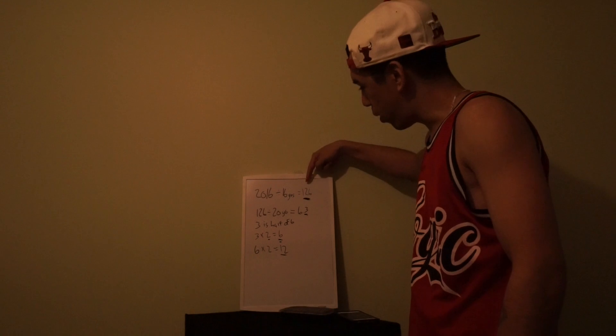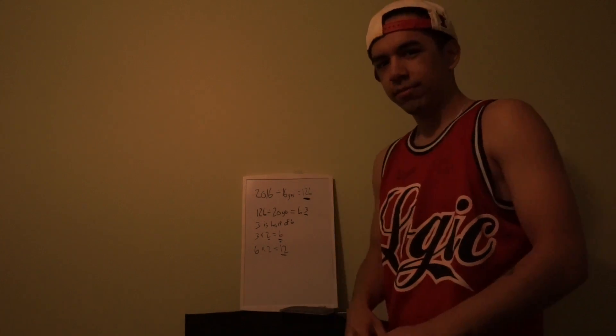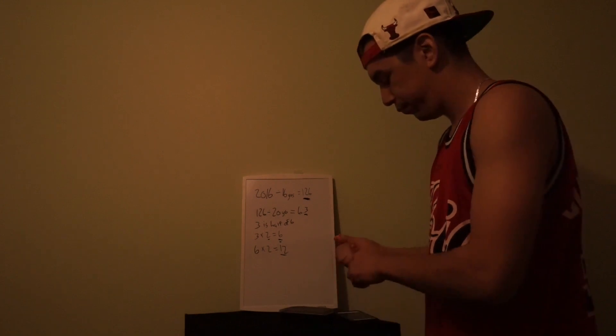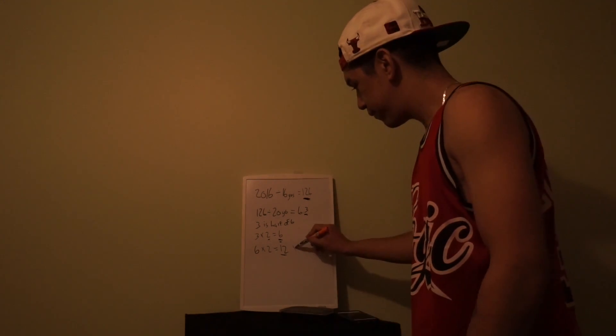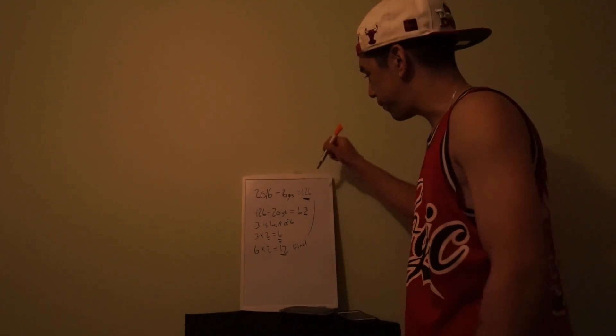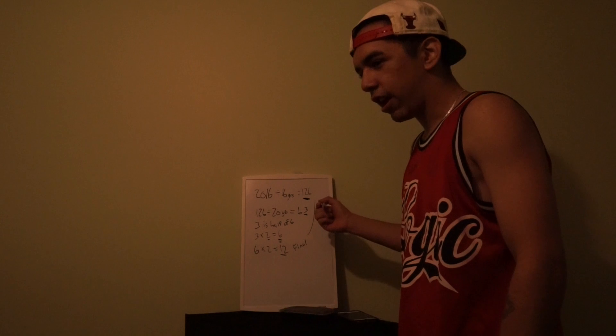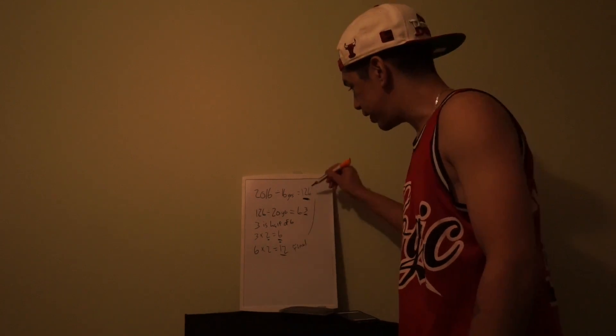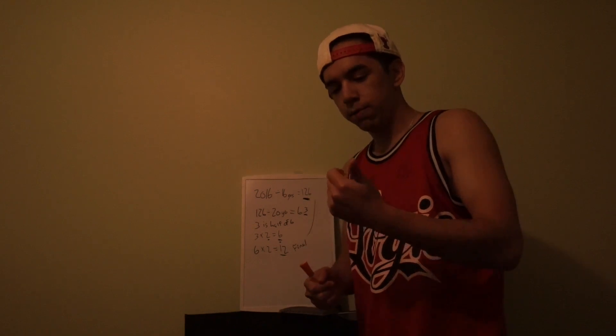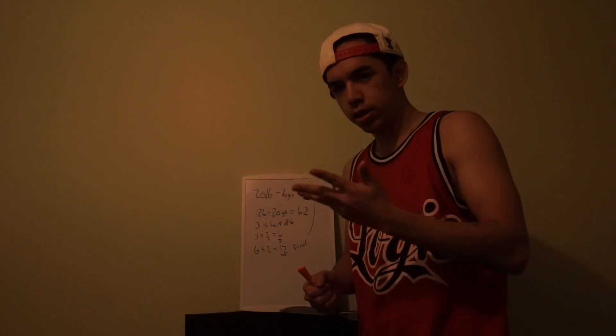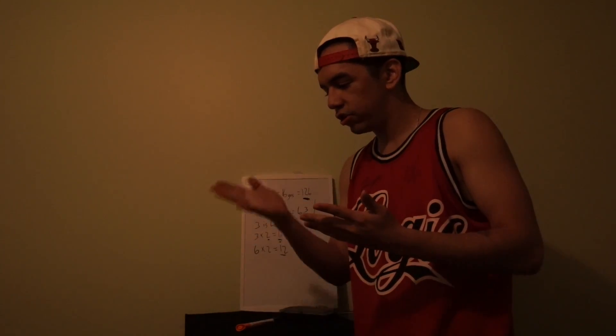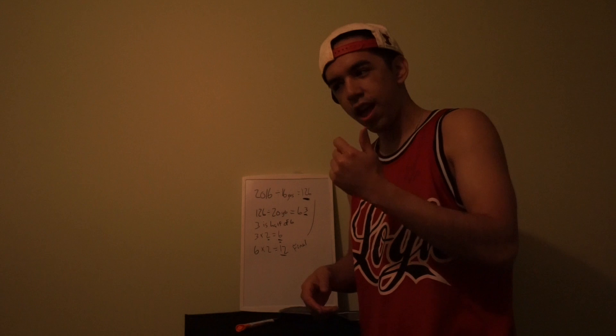This number right here, it all goes back to that. One alphabet has 26 letters in the United States. So if we take this 12, our answer, our final answer, and connect it to this 126 which was the first answer, we're obviously going to count 12 letters in the alphabet out of 26. So here we go...